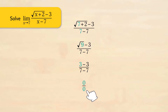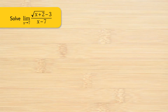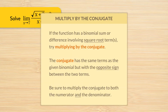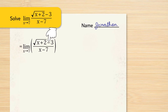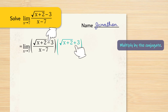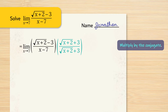We have another case of the indeterminate form 0 over 0. To work with sums and differences of roots, we're going to multiply by the conjugate. We have the square root of x plus 2 minus 3, and the conjugate of that is the square root of x plus 2 plus 3. We multiply that quantity to the numerator and the denominator — essentially multiplying by 1, but a really helpful one.